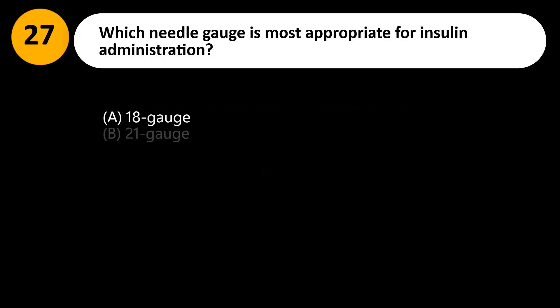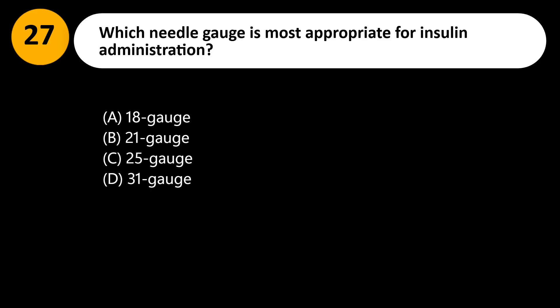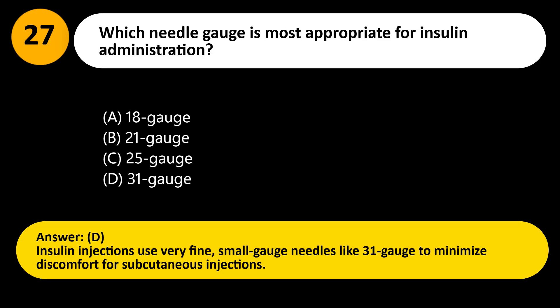Which needle gauge is most appropriate for insulin administration? A. 18 gauge. B. 21 gauge. C. 25 gauge. D. 31 gauge. Answer: D. Insulin injections use very fine, small gauge needles like 31 gauge to minimize discomfort for subcutaneous injections.